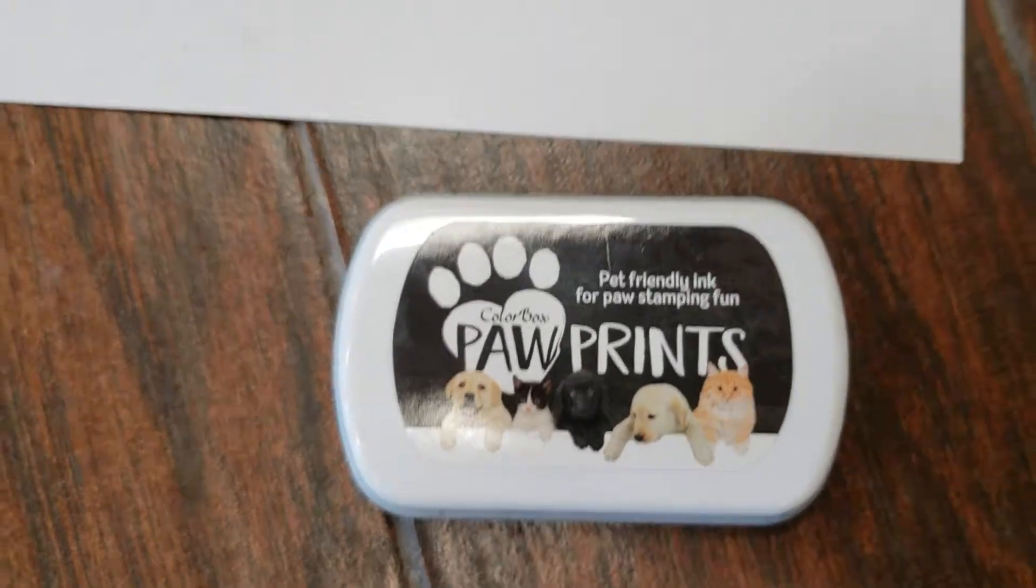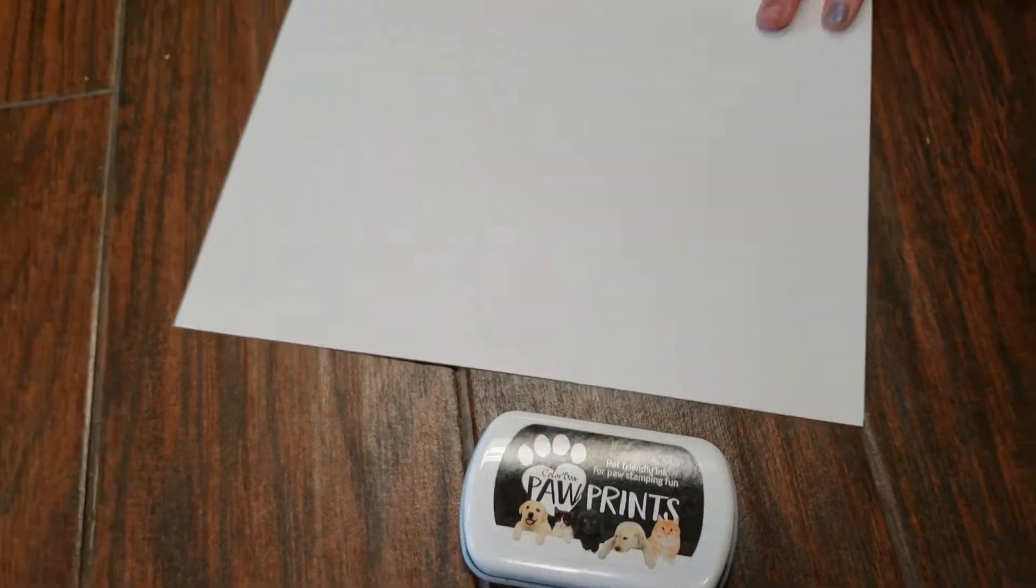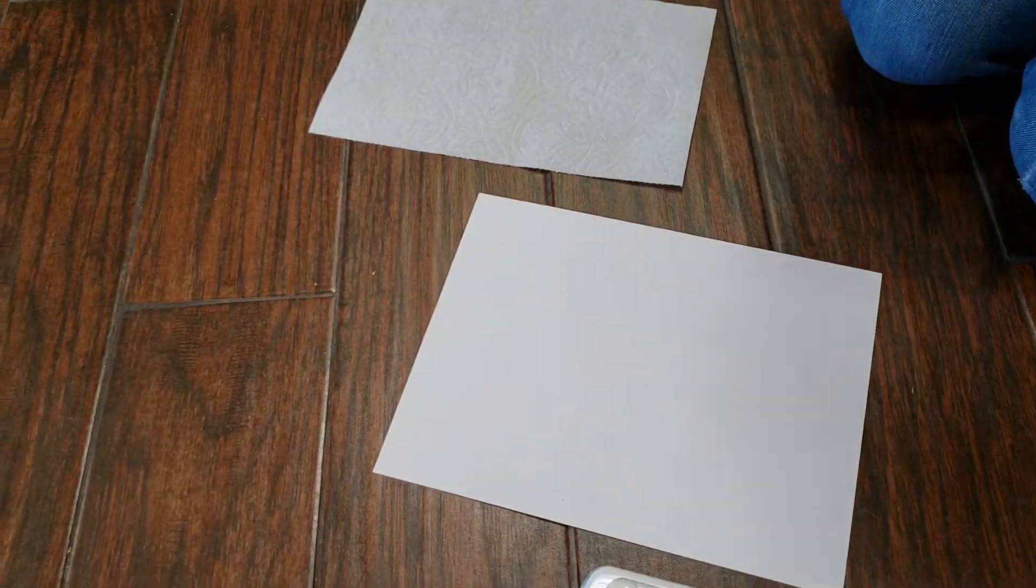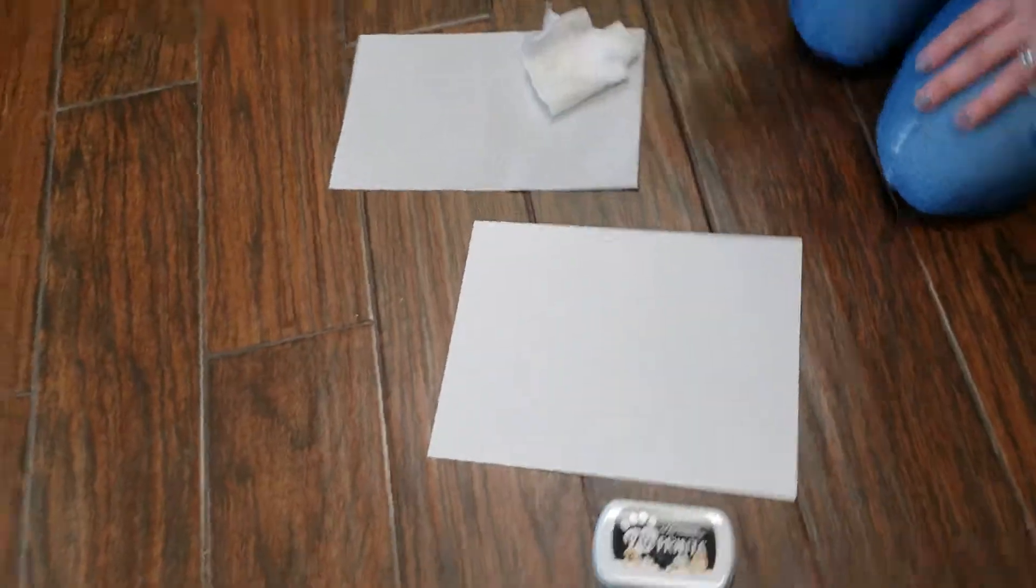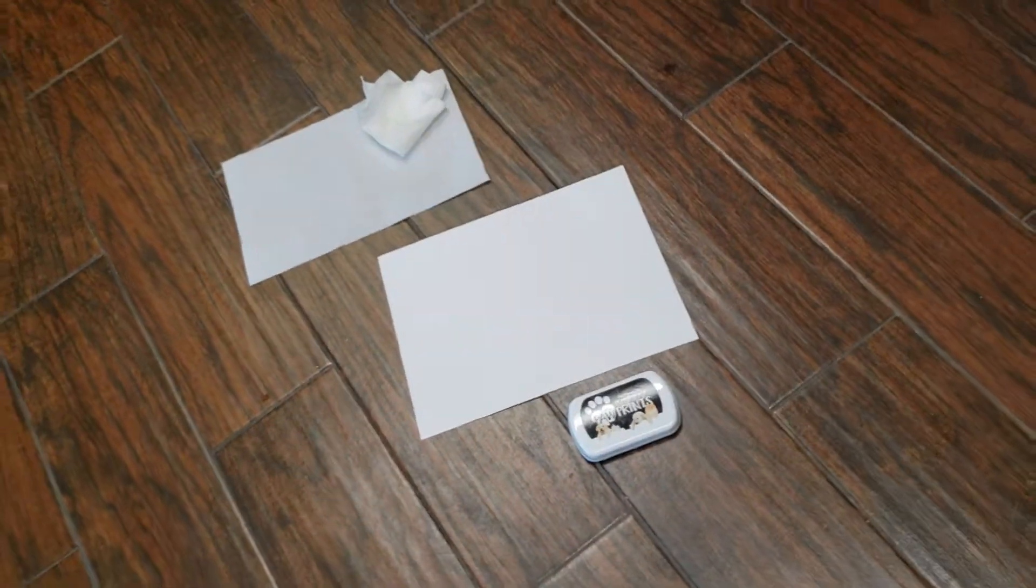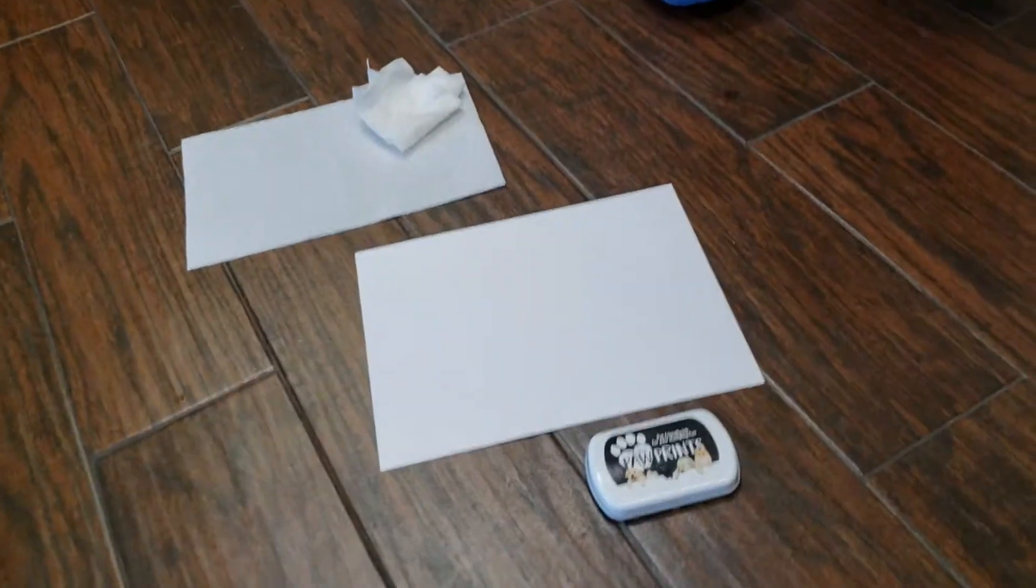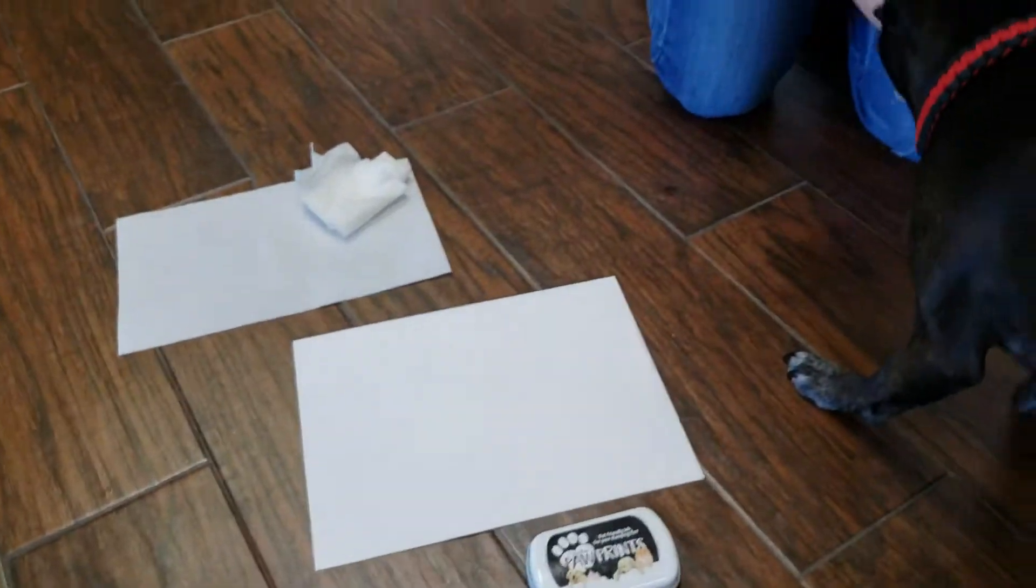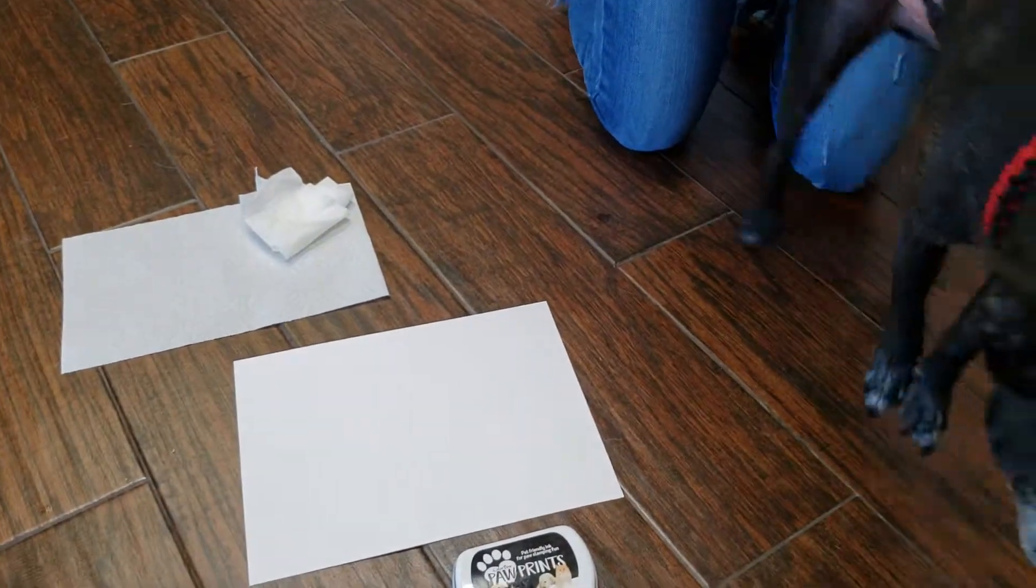All you need is a blank piece of paper, a paper towel, a wet paper towel, and maybe a dog treat. And you need a model - come here Pete, good boy!